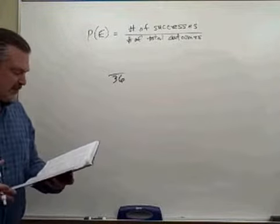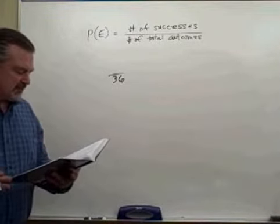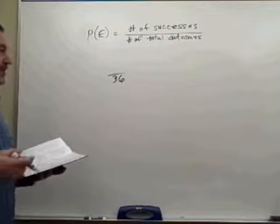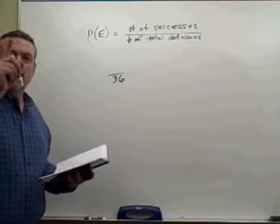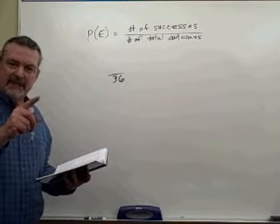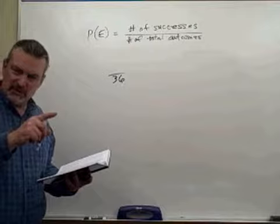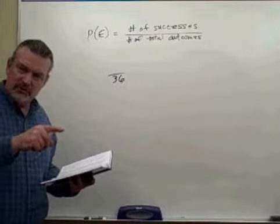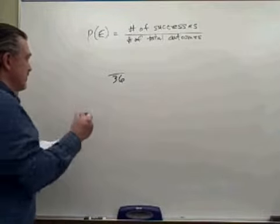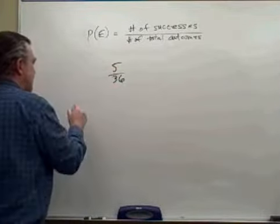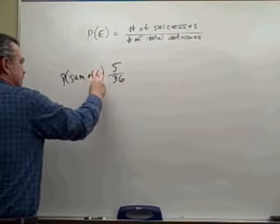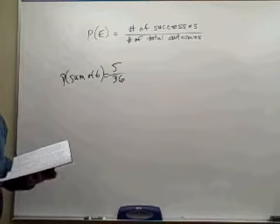And we want to know what's the probability that we will get a sum of six. Well, let's see. To get a sum of six, we could have a one and a five, a two and a four, a three and a three, and then the dice could be reversed. We'd have four and two and five and one. So there are five possible outcomes that give us a sum of six. So the probability of getting a sum of six would be equal to five out of 36.